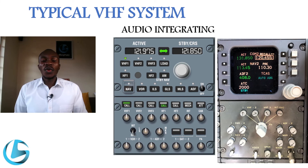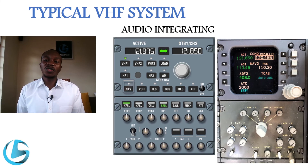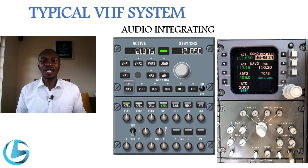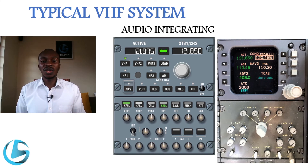On most aircraft, three VHF systems are installed, though some aircraft have two. These VHF systems all work independently — one can be used on the captain's side, one on the first officer's side, and the third for the observer on aircraft that have three systems.